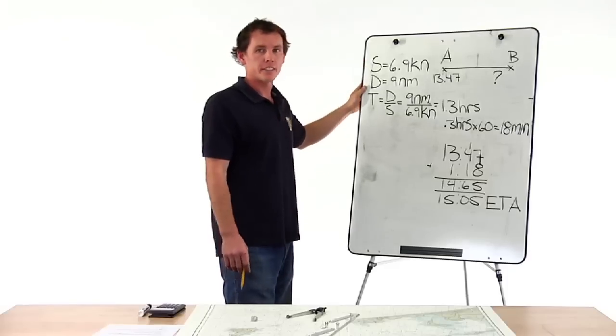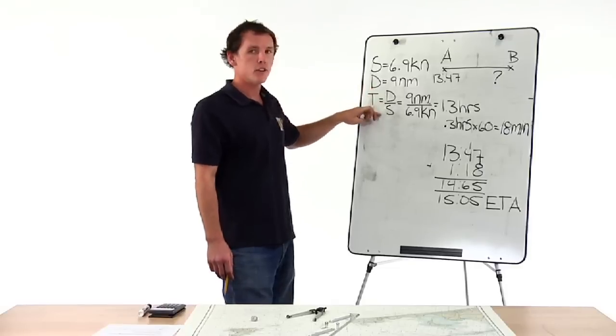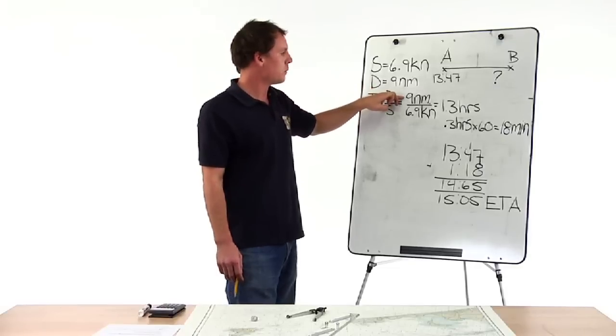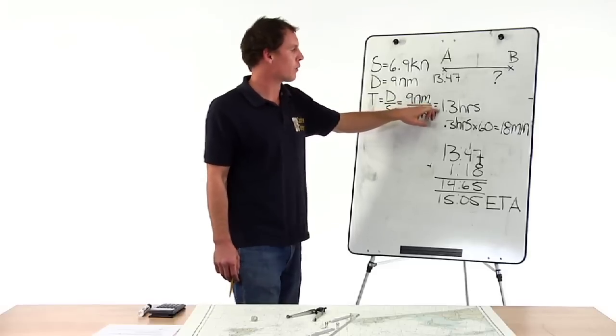Now that we have our speed and distance, we can calculate time. Time equals distance over speed. Nine nautical miles divided by 6.9 knots is 1.3 hours.